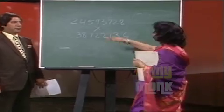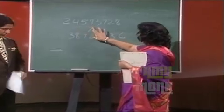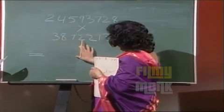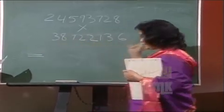Okay. Now, the question is 2, 4, 5, 9, 3, 7, 2, 8 multiplied by 3, 8, 7, 2, 2, 1, 3, 6.